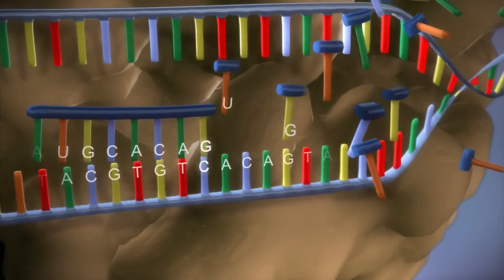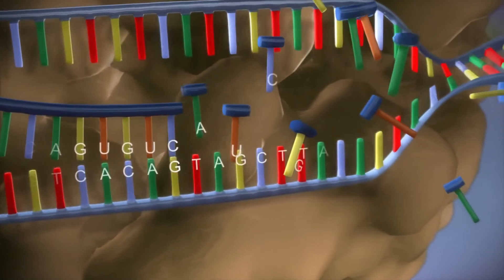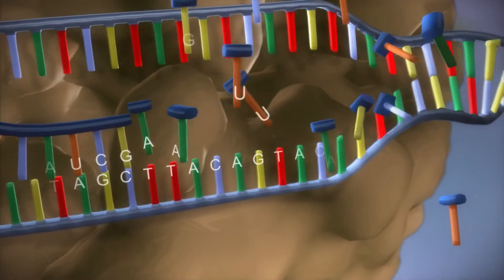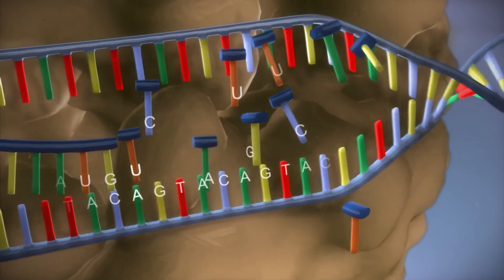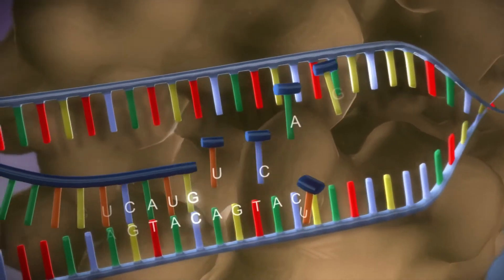The DNA code determines the order in which the free bases are added to the messenger RNA. This process is called transcription.